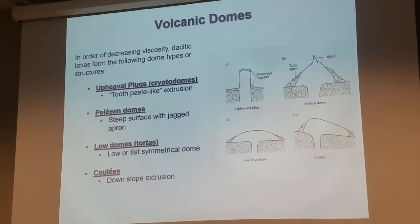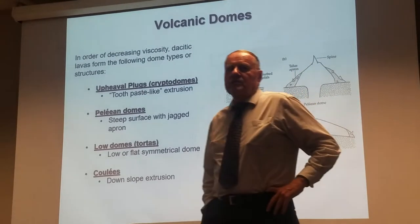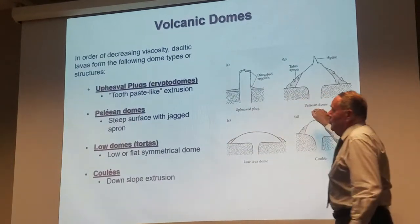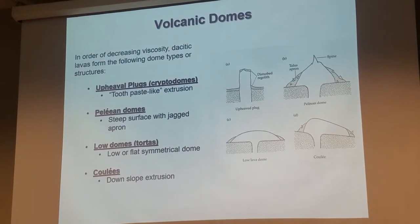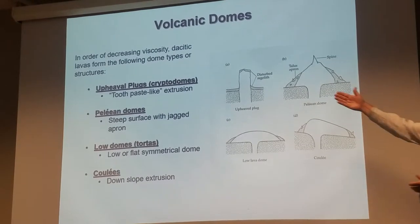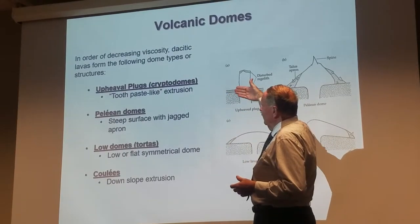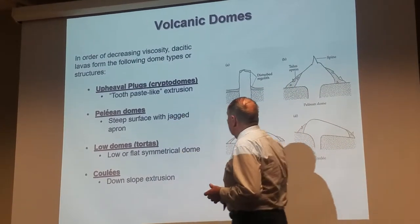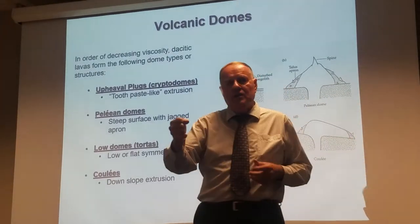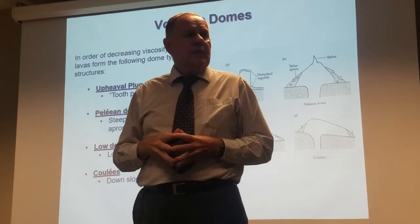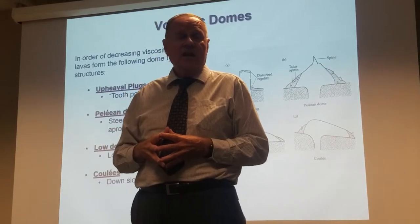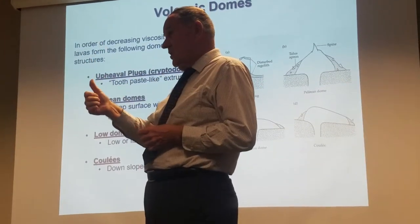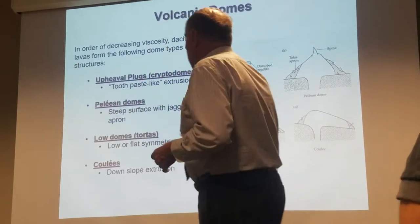Volcanic domes — most of these are going to be dacitic in composition, and as mentioned previously, sometimes these can be very dangerous, especially the Pelean-type domes. What I'm showing here is different classes of domes from most viscous to least viscous as we move down the chart. These are upheaval plugs, sometimes called cryptodomes — like taking a tube of toothpaste and squeezing it, watching the toothpaste come out the top. Generally, this acidic lava has a lower volatile content, so it stays inherently intact as it moves up. Because it has a much higher viscosity, it allows it to move up just like a piston.